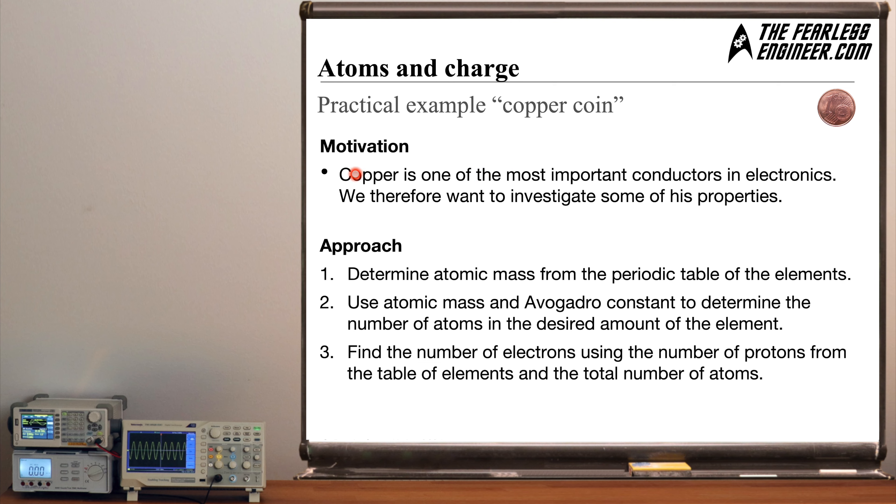Now before we start with the actual example let's first discuss the motivation why it makes sense for us to do this. Why it makes sense for us to invest time to closely looking at copper in a copper coin. Well copper is one of the most important elements which we have in electronics because it's used as a primary conductor in most devices. It's used for cabling, it's used on PCBs and it has many many other applications. And also it's much much cheaper than for example silver which makes it also very attractive from a pricing point of view. And this is why we want to investigate at least some of the properties of copper.